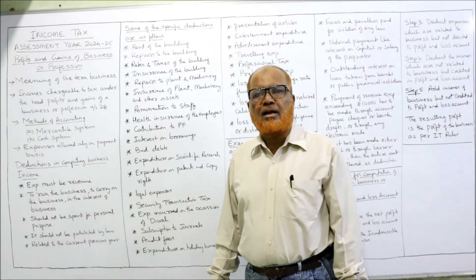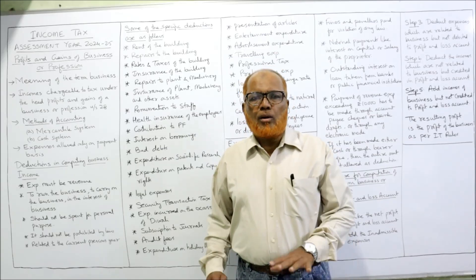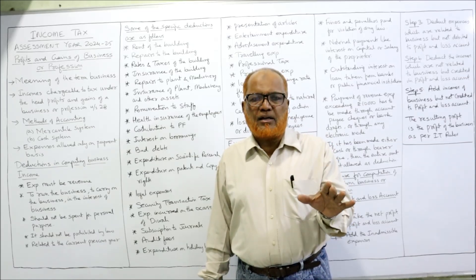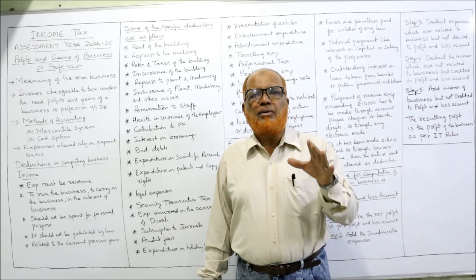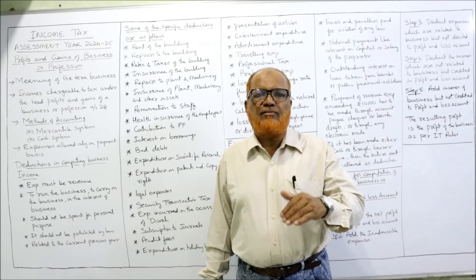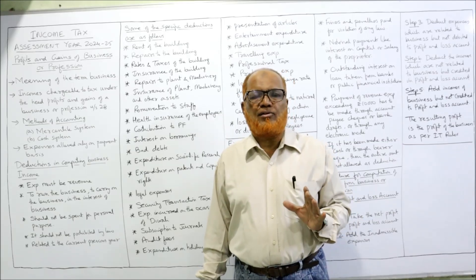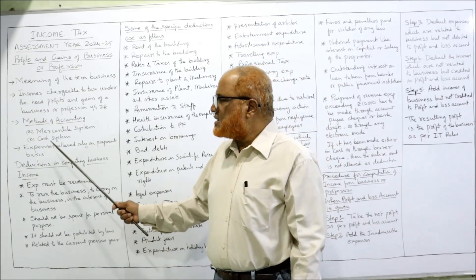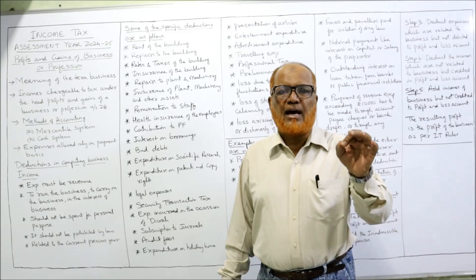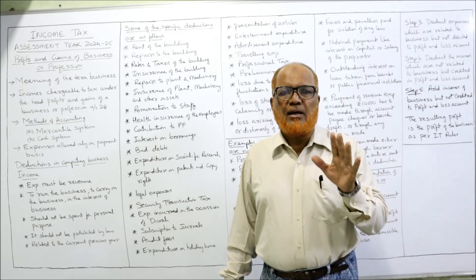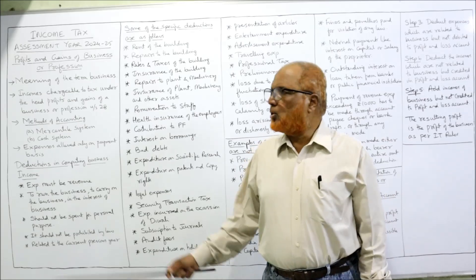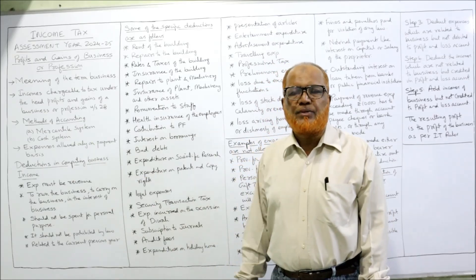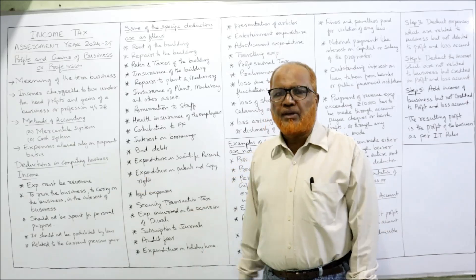Methods of accounting: there are two methods — the mercantile system and the cash system. The mercantile system means the accrual system: all expenses of the current previous year whether paid or not, and all incomes of the current year whether received or not, should be taken into account to calculate income. That is called the mercantile system. Under the cash system of accounting, only cash receipts and cash payments are considered; outstanding and prepaid amounts will not be adjusted. Majority of business houses follow the mercantile system, while few professional firms may follow the cash system.